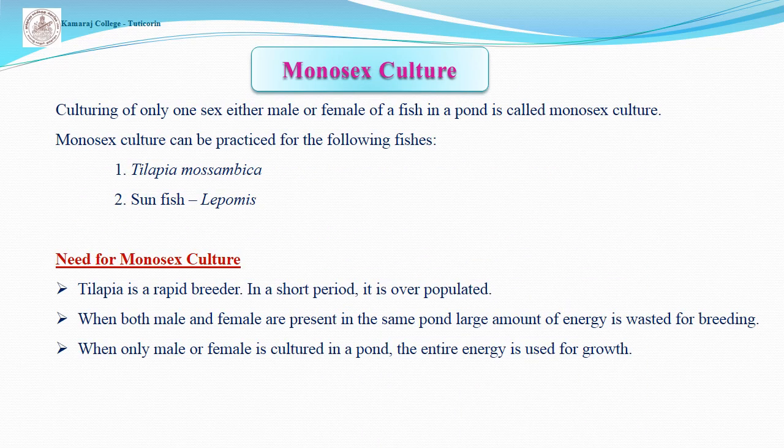The second type is monosex culture, which means culturing only one sex — either male or female — of a fish species in a pond. Monosex culture is practiced with tilapia mossambica and sunfishes. Tilapia is a rapid breeder and quickly overpopulates when both sexes are present in the same pond. Large amounts of energy are wasted for breeding, so when only male or female is cultured, the entire energy is used for growth.